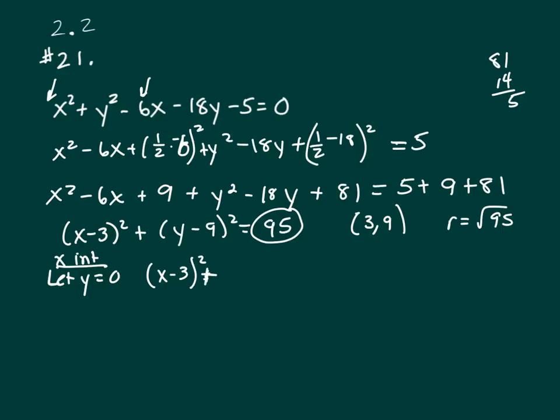X minus 3 squared plus 0 minus 9 squared equals 95. So this is X minus 3 squared plus 81 equals 95. So X minus 3 squared equals 14.